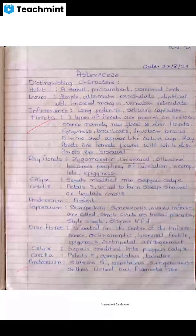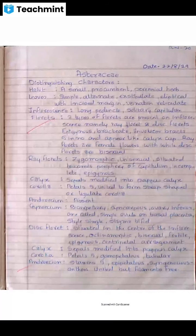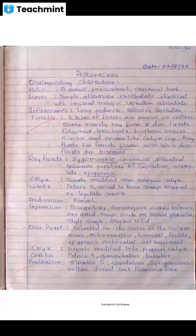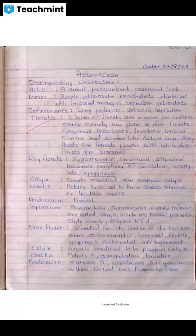Next is disc florets: situated in the center of the inflorescence. They are actinomorphic, bisexual, fertile, epigynous, with centripetal arrangement — meaning the younger metaxylem vessels are found towards the pith and older protoxylem vessels are away from the pith.